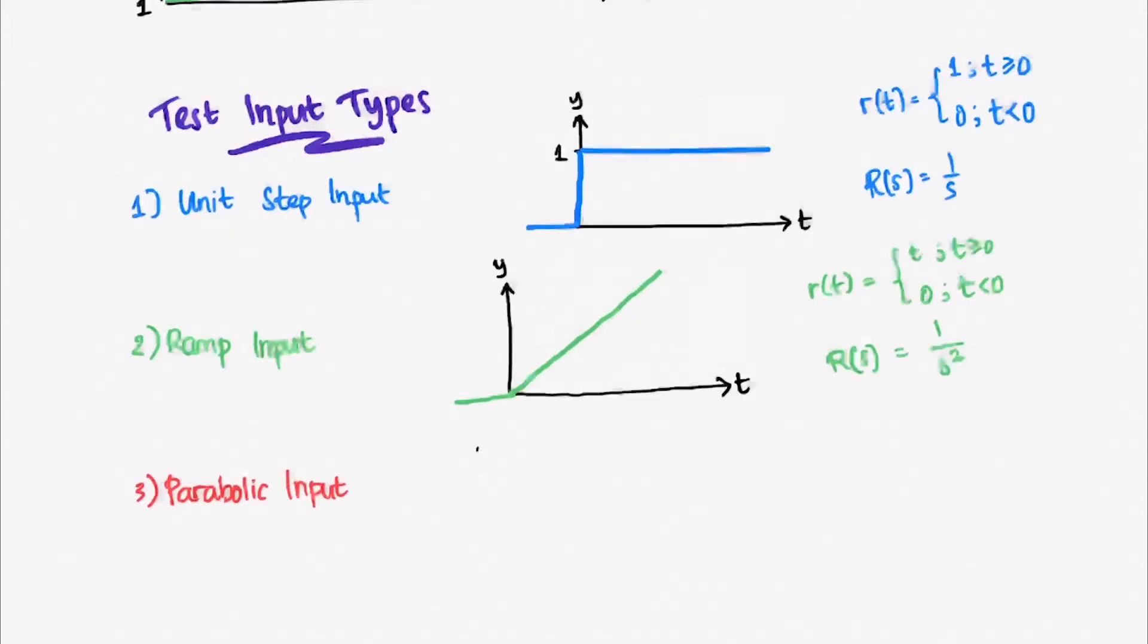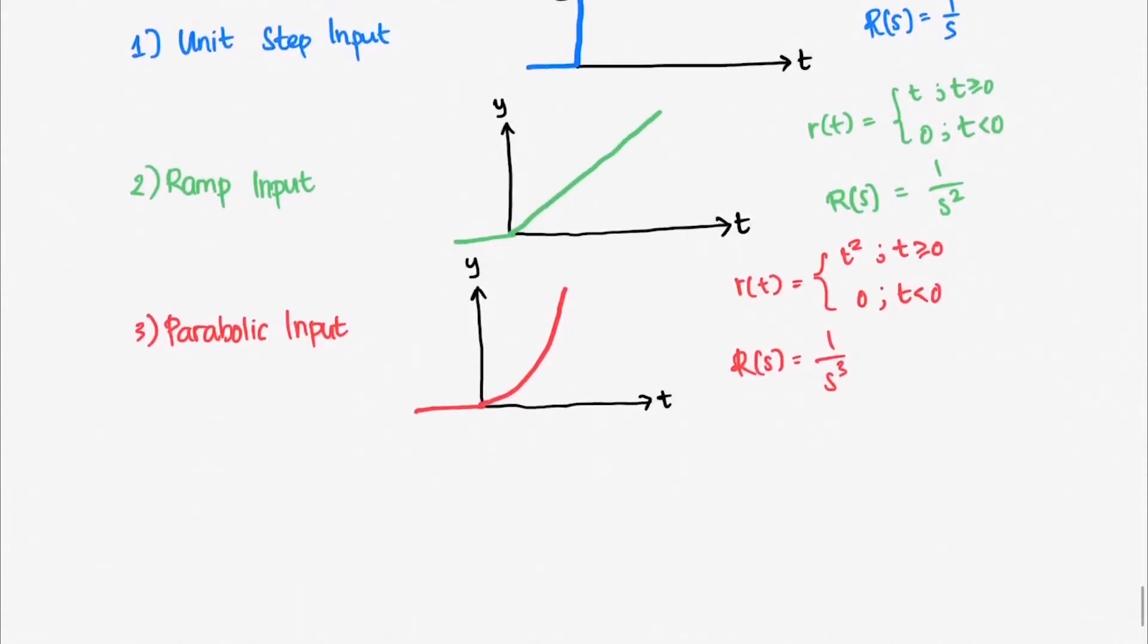And the third one is the parabolic input. This is how a parabolic input looks like. Notice that all three inputs have different parameters.